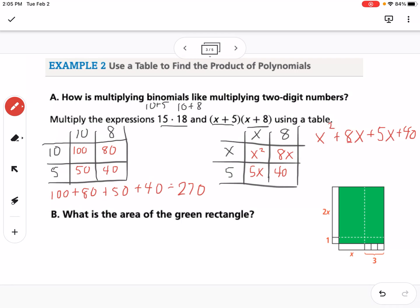I can combine those two middle terms because they're like terms. So this would be x squared plus 13x plus 40. You can see the similarities, and this works in both cases.